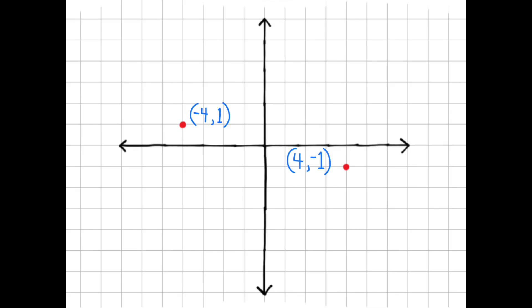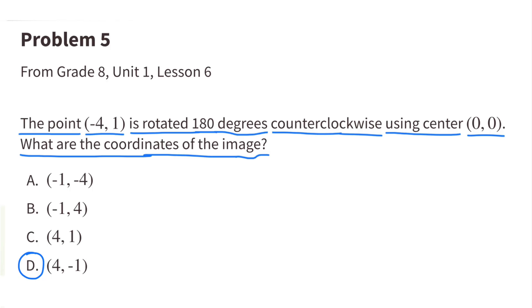Right in the middle where these two axes intersect. When you rotate the point negative 4, positive 1, 180 degrees, it ends up at positive 4, negative 1. The answer would be D.